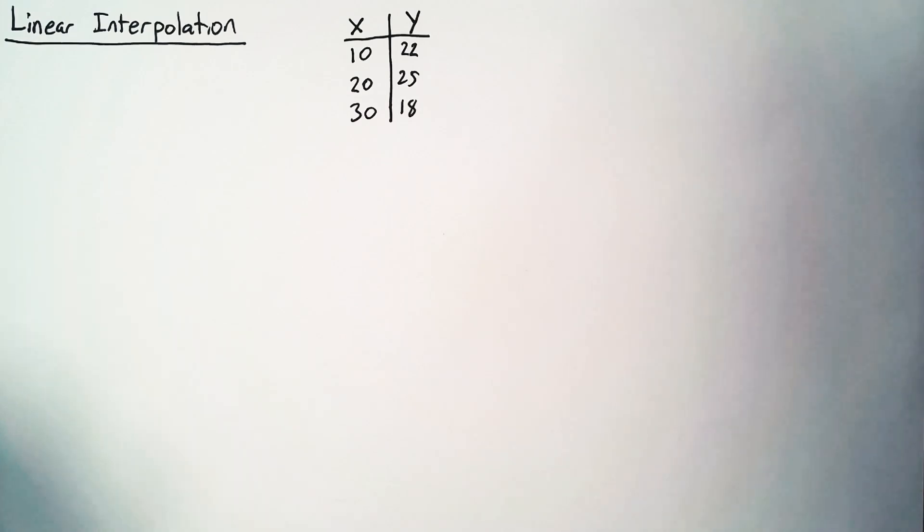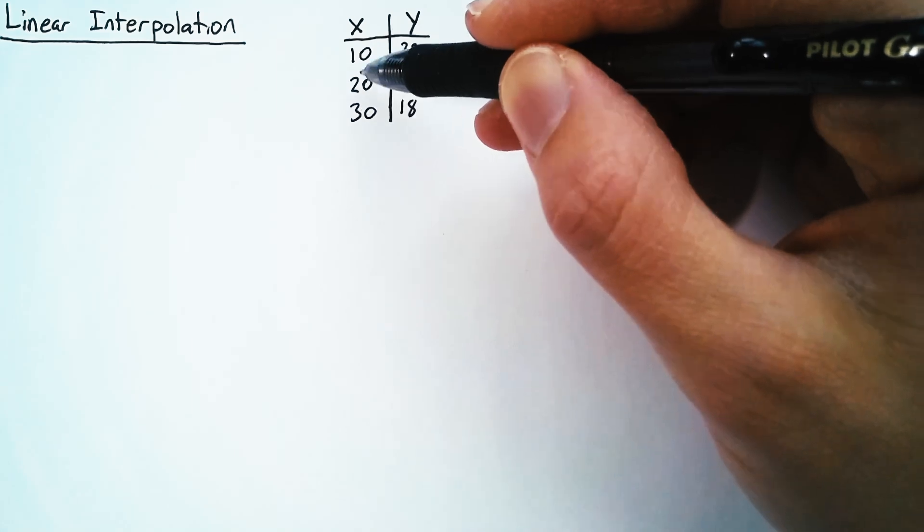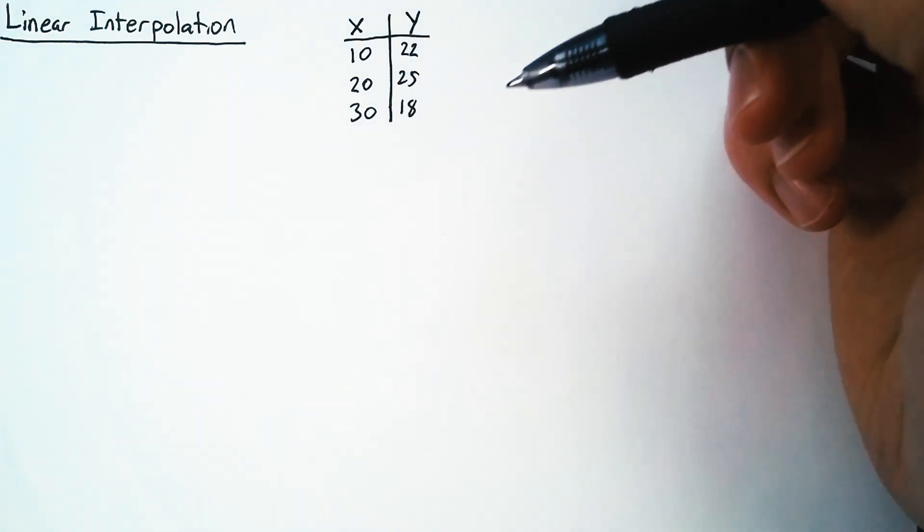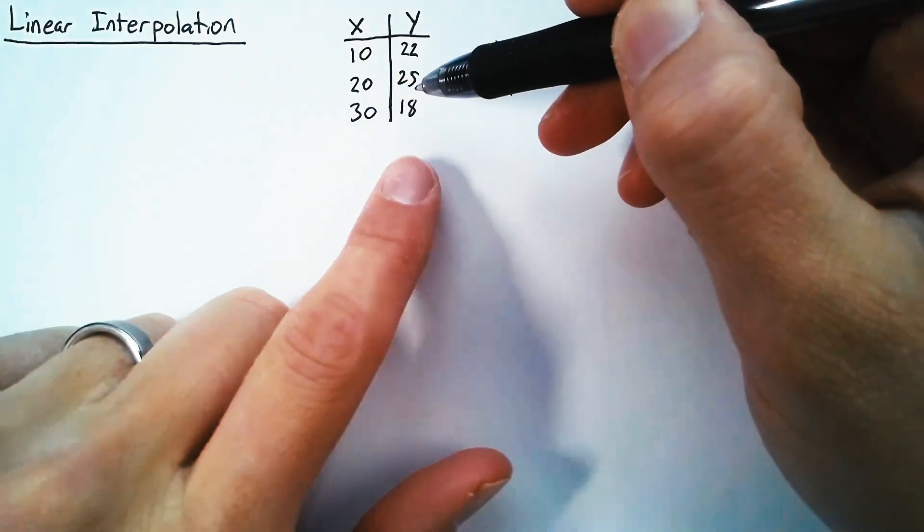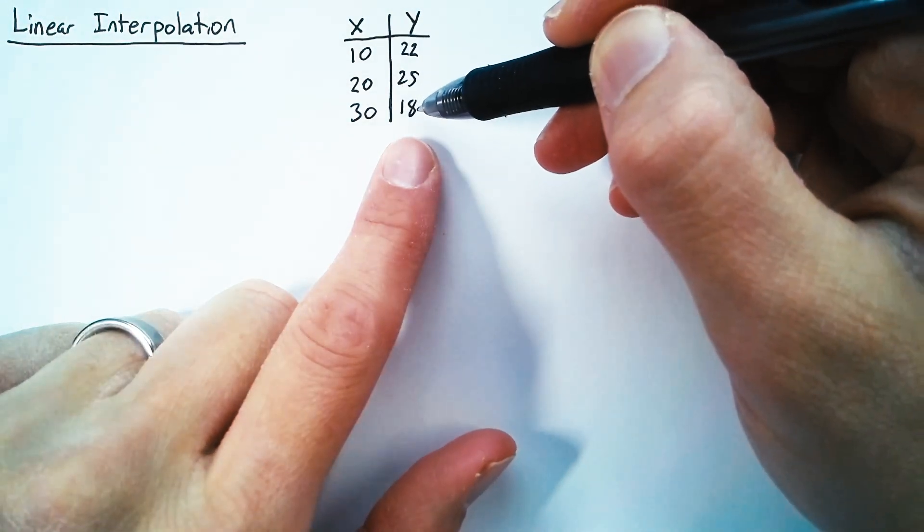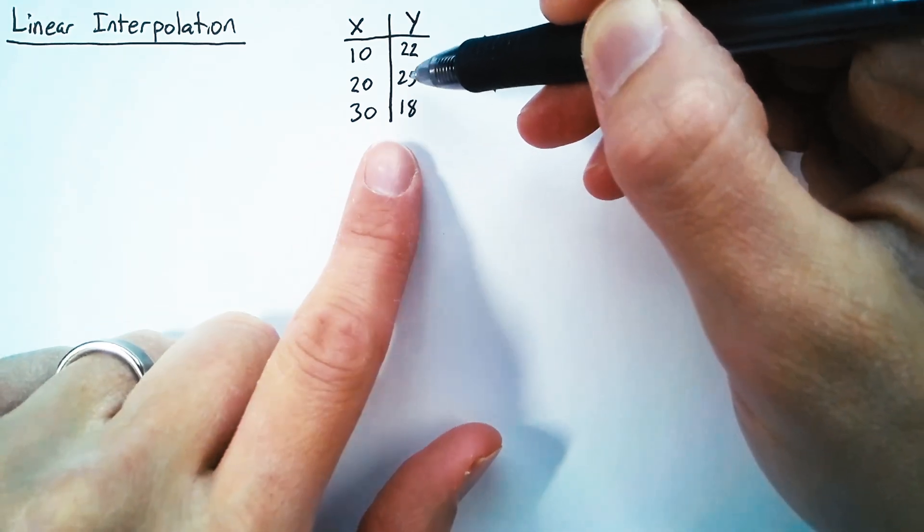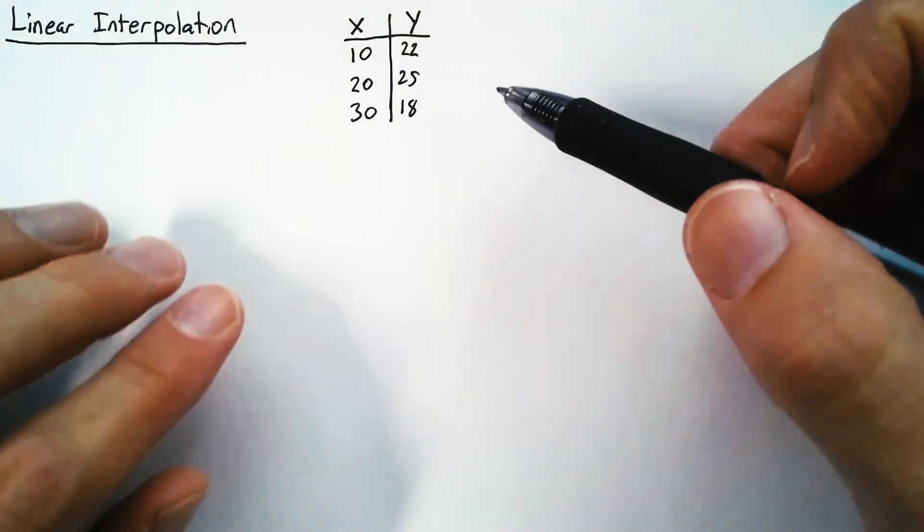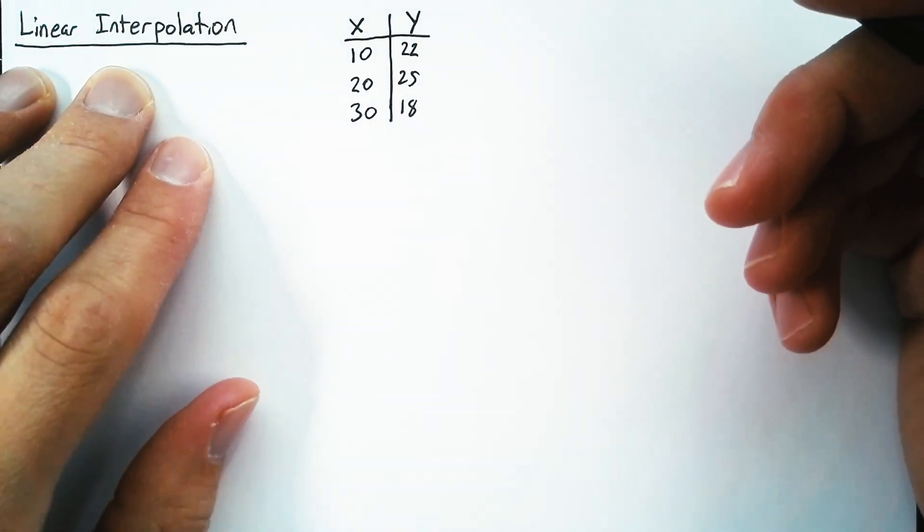Now the question we're trying to answer is, what is y if our x value is in between one of these points? Let's say that x is equal to 27. In that case, we can reasonably expect that y is going to be in between 18 and 25, but the exact value is kind of a guess. Well, linear interpolation tells us exactly how to make that guess.